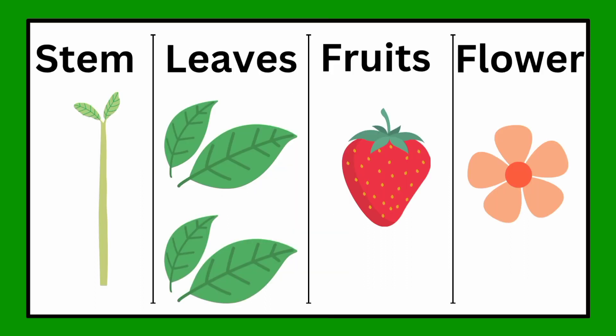Shoot has many different parts: stem, leaves, fruits and flower.